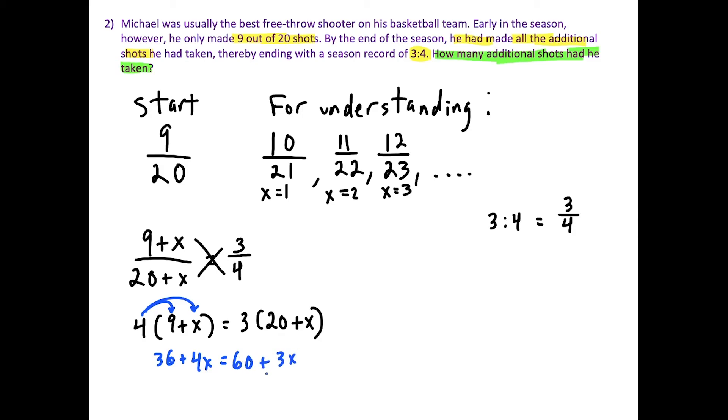So now we've got x is on both sides. So we could bring the 3x over to the left side. And 3x minus 3x cancels. And now we have 36 plus x is equal to 60. So then to solve for x, you just have to subtract 36 on both sides. And this tells us that x is equal to 24.